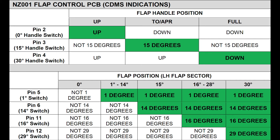For example, if the flap handle is in the up position and all the proximity switches in the left flap sector are functioning properly, the zero-degree switches should read as follows: pin 5 should show not 1 degree, pin 6 should read not 14 degrees, pin 11 should read not 16 degrees, and pin 12 should read not 29 degrees. Conversely, if pin 12 confirms 29 degrees when the handle is in the up position, that would indicate the 29 degree proximity switch is failing.